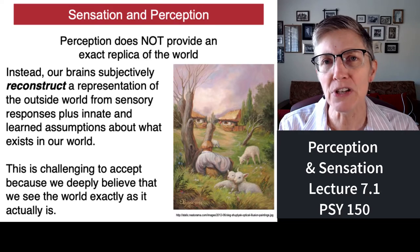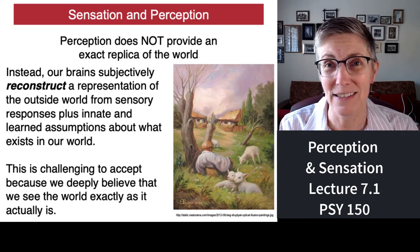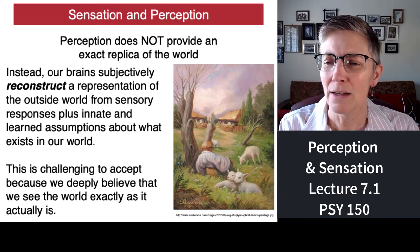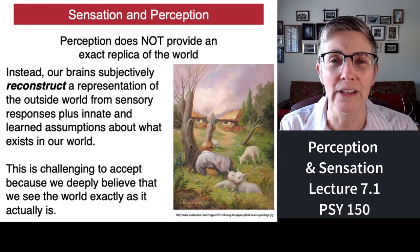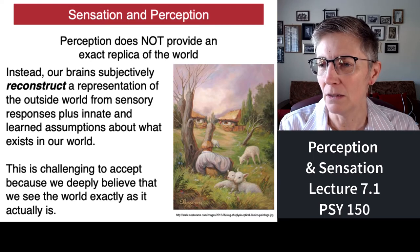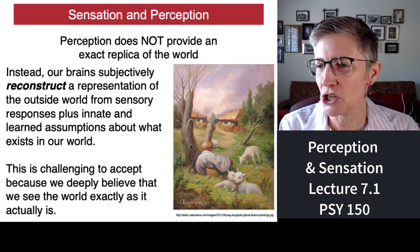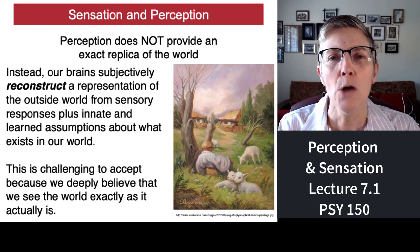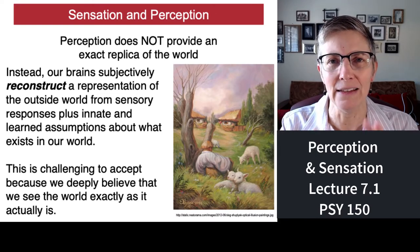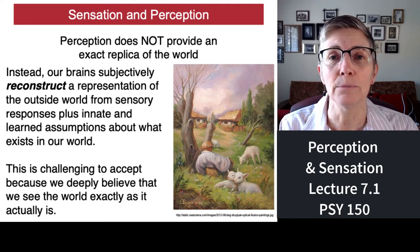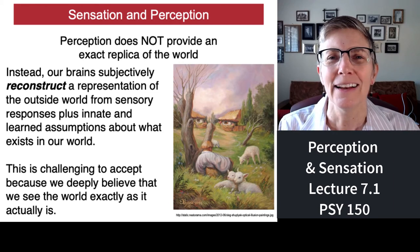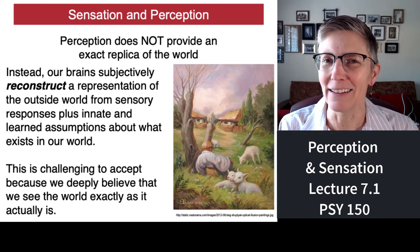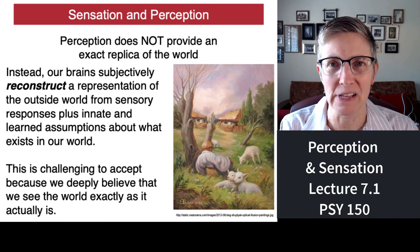The way your brain deals with ambiguity is by using your expectations, your prior experiences, and your knowledge of the world to help you interpret sensory information. So perception involves assumptions. For example, I have a fun painting here of a farm scene — there are a couple of sheep and some houses in the background. But if you look at it from a distance, it looks like an old man's head with a big mustache. He's not there, but we perceive him to be there.